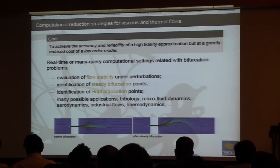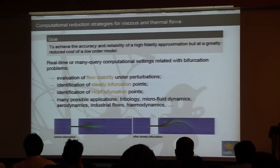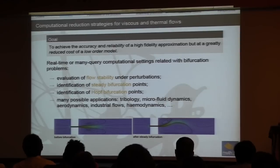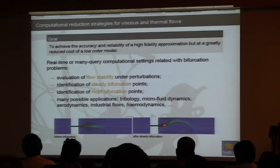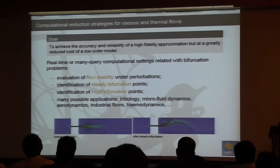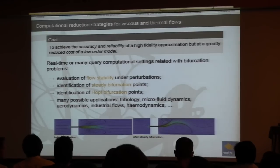We focus on bifurcation problems: the evaluation of flow stability under perturbation and the identification of steady bifurcation points and Hopf bifurcation points. An example shows a flow with perfect symmetry that breaks into different vortices — an attachment of the mainstream to the wall called the Coandă effect. Applications include tribology, microfluidics, aerodynamics, industrial flows, and hemodynamics.